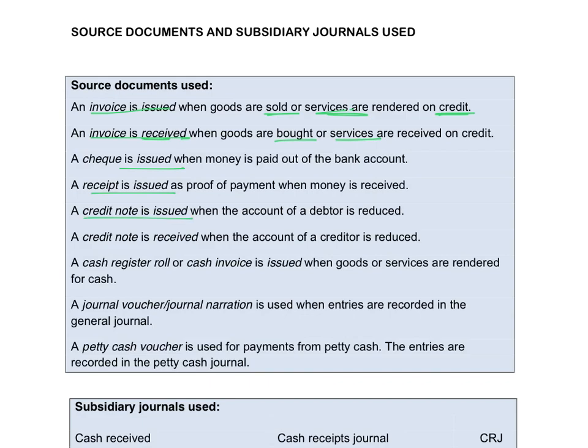A credit note is issued to your debtors to reduce their accounts because they returned goods, a mistake was made on the invoice, or the goods were damaged when delivered to the debtor. There are various reasons why you want to reduce a debtor's account, and you do that with a credit note.